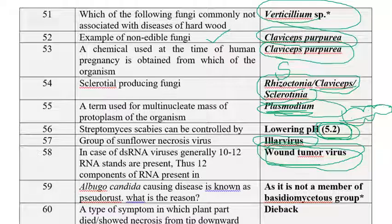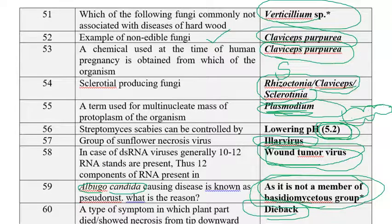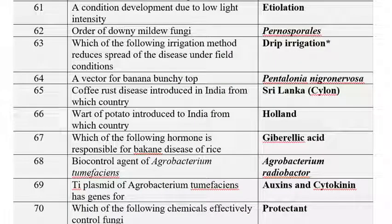Albugo candida causes disease known as pseudo rust, not true rust. The reason is that it is not a member of Basidiomycota group — Albugo candida comes under Oomycota, not Basidiomycota, which is why it is pseudo rust. A type of symptom in which the plant part shows necrosis from the tip downwards is called die-back. A condition caused by low light intensity is etiolation, and downward bending of leaves is known as epinasty.